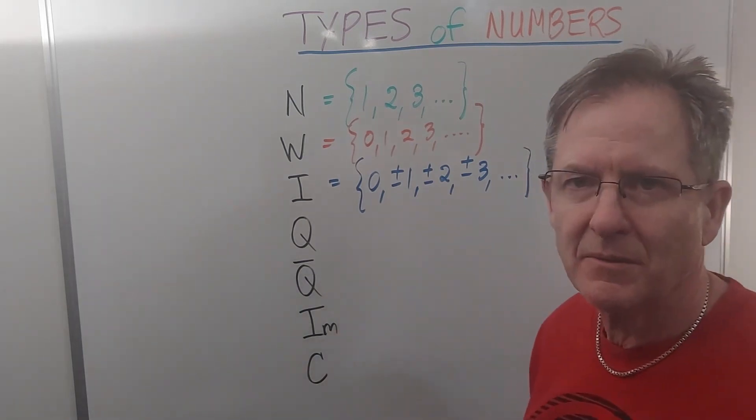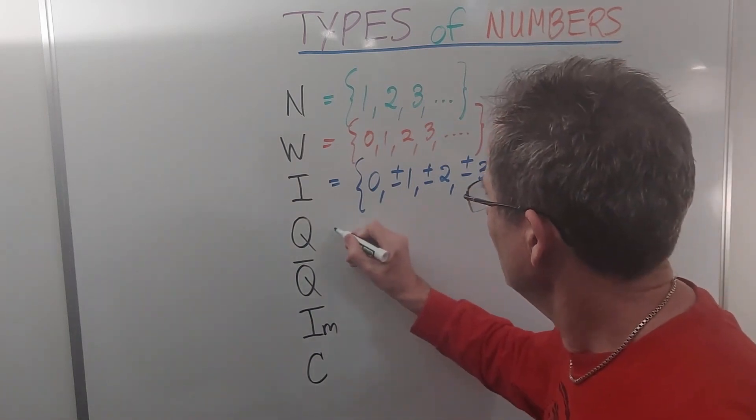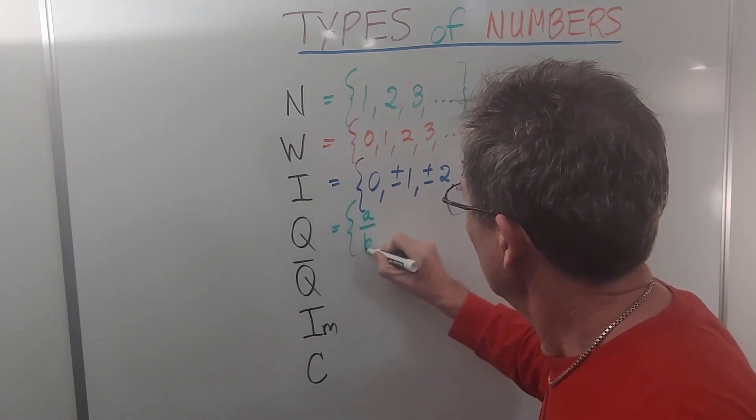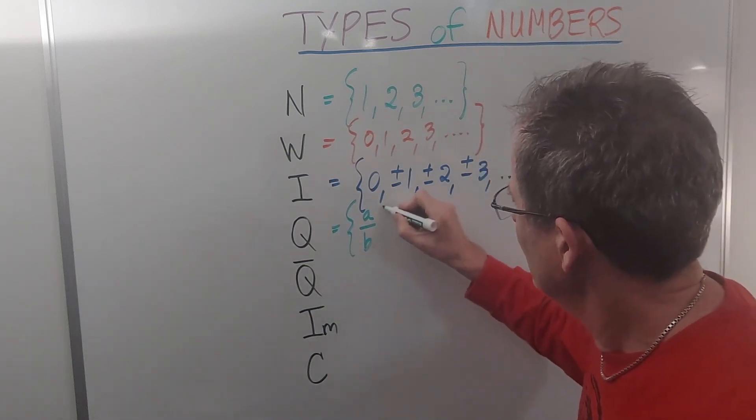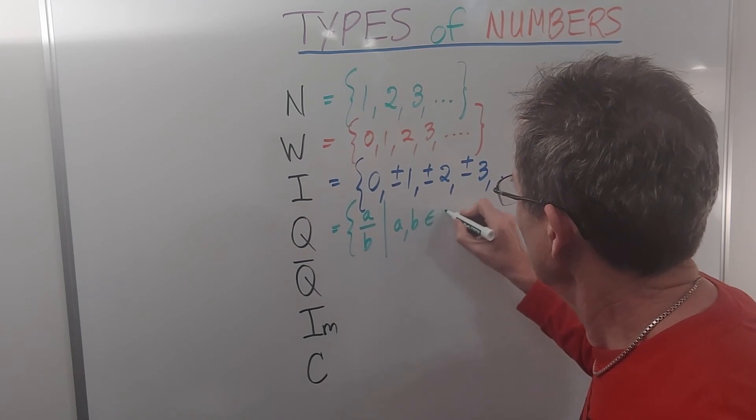The rational numbers, represented by the letter Q, because R is going to be used for something else, is all the numbers that can be written as a fraction, such that a and b belong to the integers.